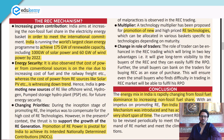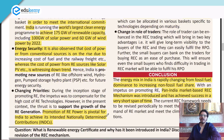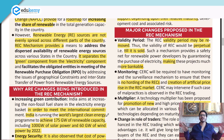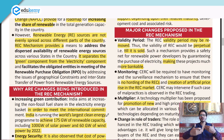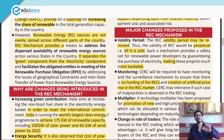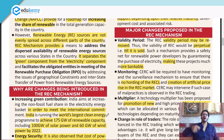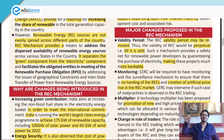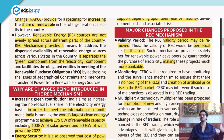Now, what changes have been made to the REC mechanism? The first major change is that REC validity may be removed — it will be made perpetual until it is sold. Previously, a certificate had a validity period limiting how long it could be traded. If a producer couldn't trade it in time, they suffered a loss. Now the validity is removed; the REC remains valid until it is sold, making these projects more bankable and the selling of RECs much easier.